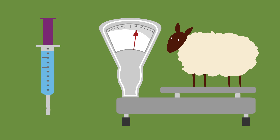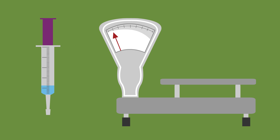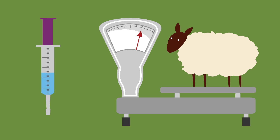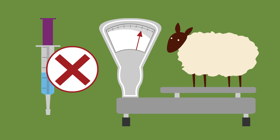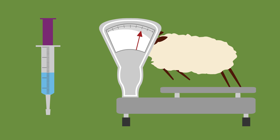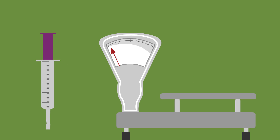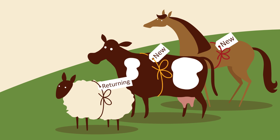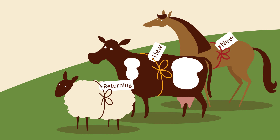Underdosing is another factor that promotes the selection of resistance. Don't forget that when you introduce new or returning animals to your premises, they may be carrying resistant worms, which will contaminate your pasture.